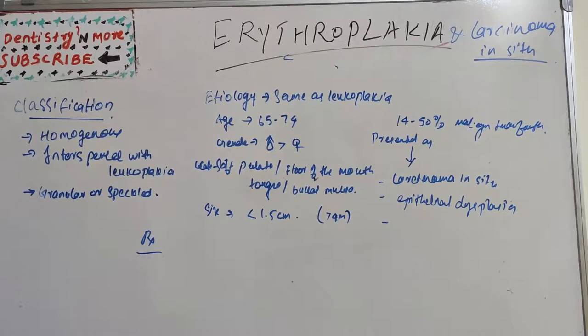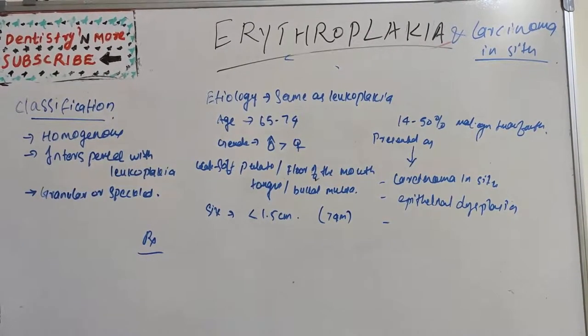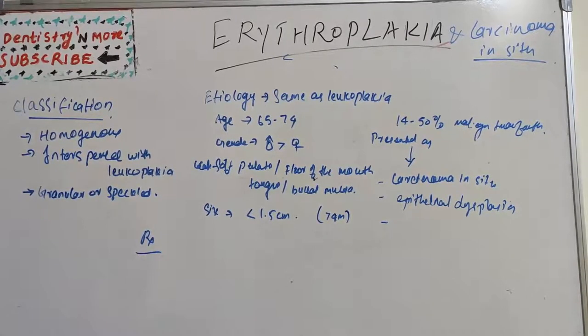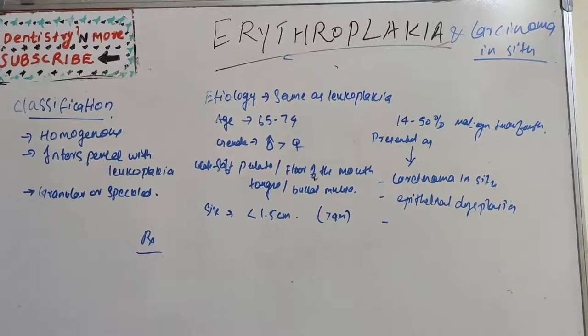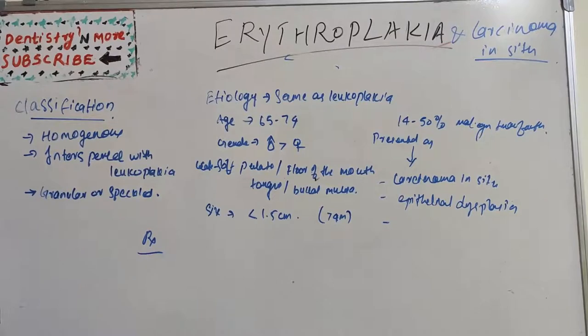They are pre-malignant lesions. Pre-malignant lesions are nothing but morphologically altered tissue in which cancer is more likely to occur than its apparently normal counterpart. Another thing is pre-cancerous condition, which is a generalized state of the body associated with significantly increased risk of cancer.